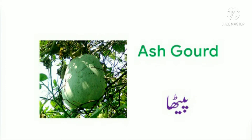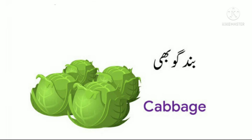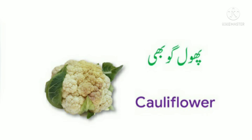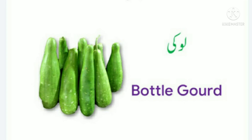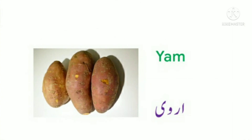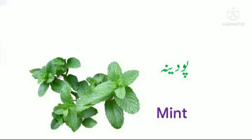Number thirty-two: ash gourd, petha. Number thirty-three: cabbage, band gobi. Number thirty-four: cauliflower, phool gobi. Number thirty-five: apple gourd, tinde. Number thirty-six: bottle gourd, loki. Number thirty-seven: yam, arvi. Number thirty-eight: mint, podina.